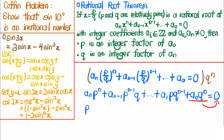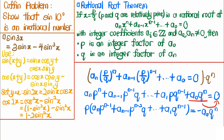Factoring out p gives: p·(aₙ·pⁿ⁻¹ + aₙ₋₁·pⁿ⁻²·q + ... + a₁·qⁿ⁻¹) = −a₀·qⁿ. The left-hand side is a multiple of p, so p divides a₀·qⁿ. Since p and q are relatively prime, p and qⁿ are also relatively prime, and therefore p must divide a₀.